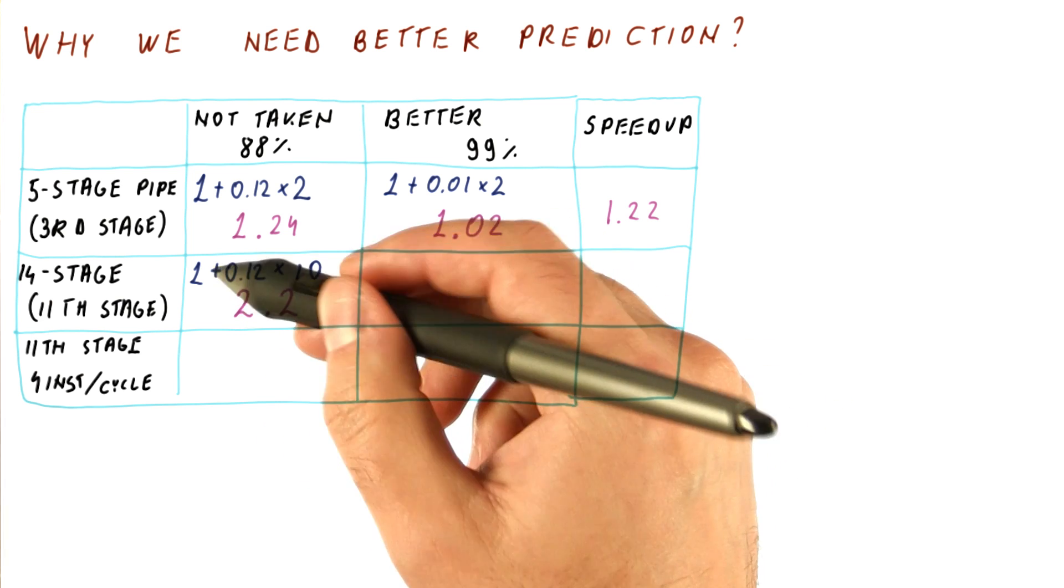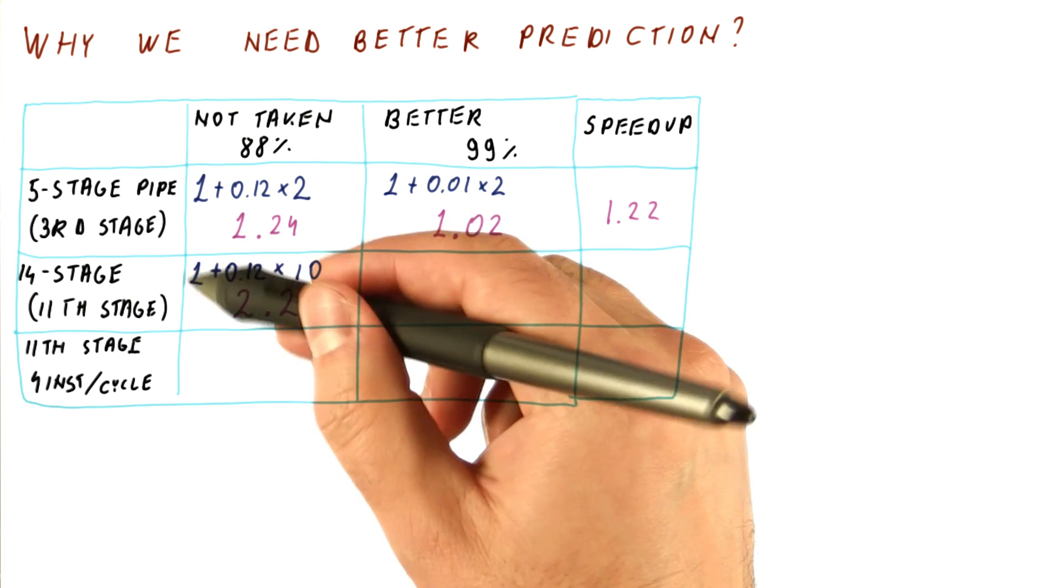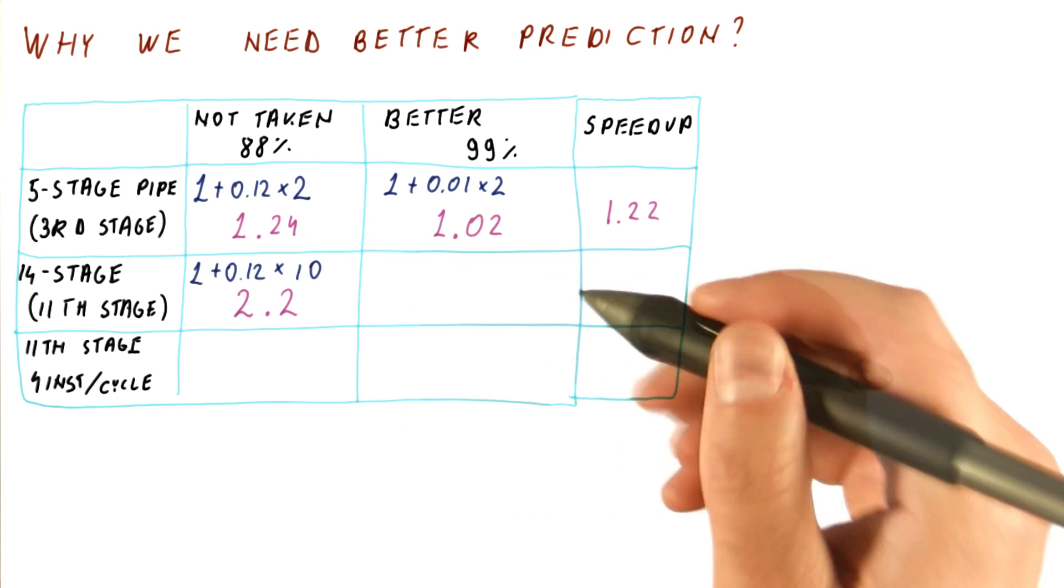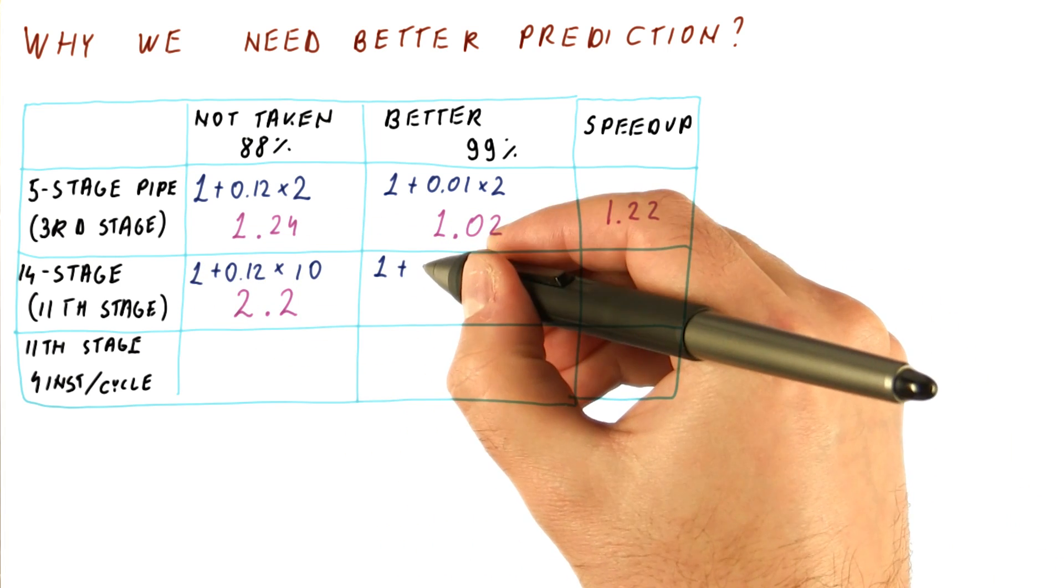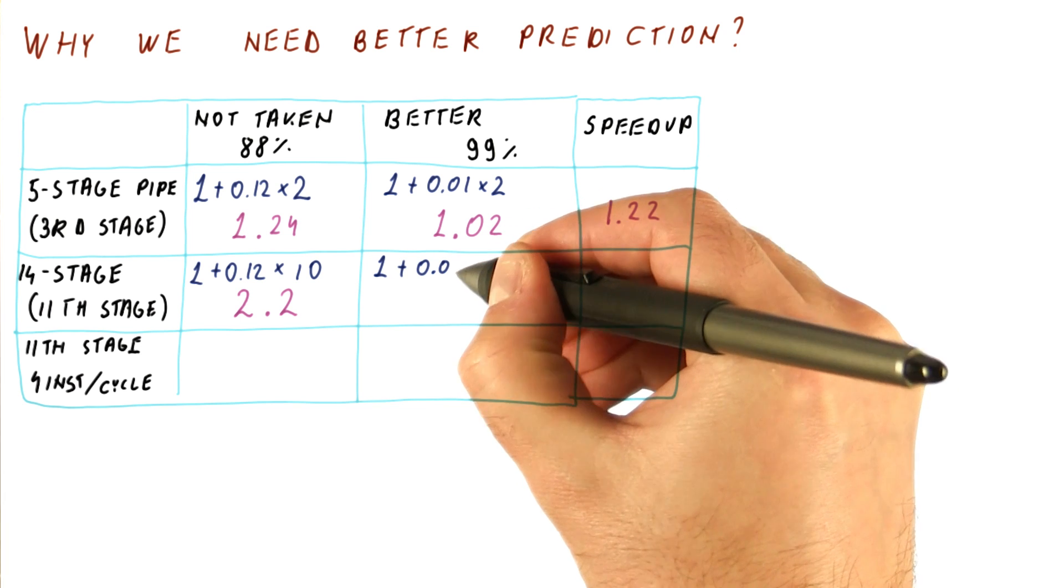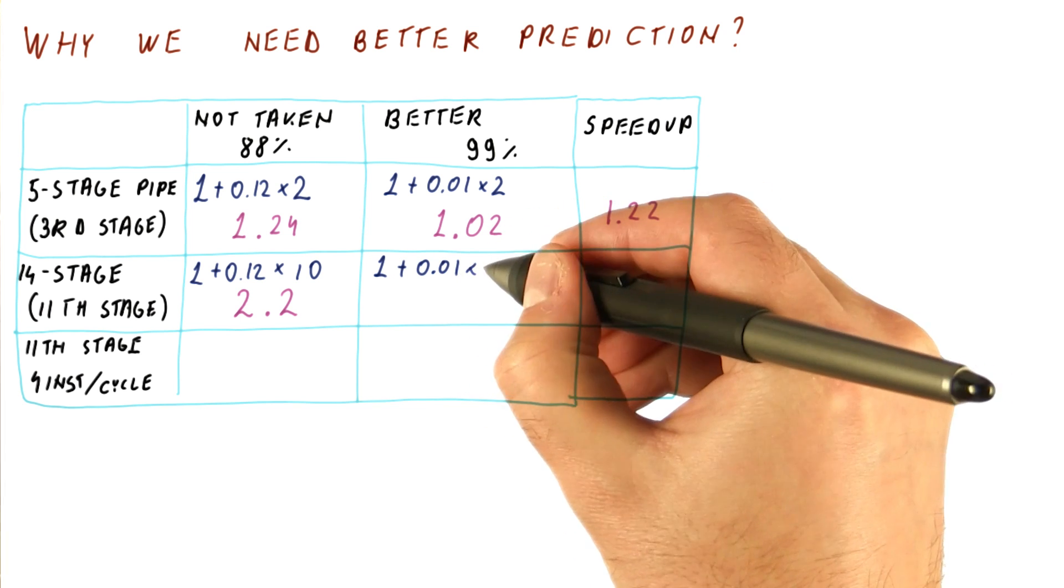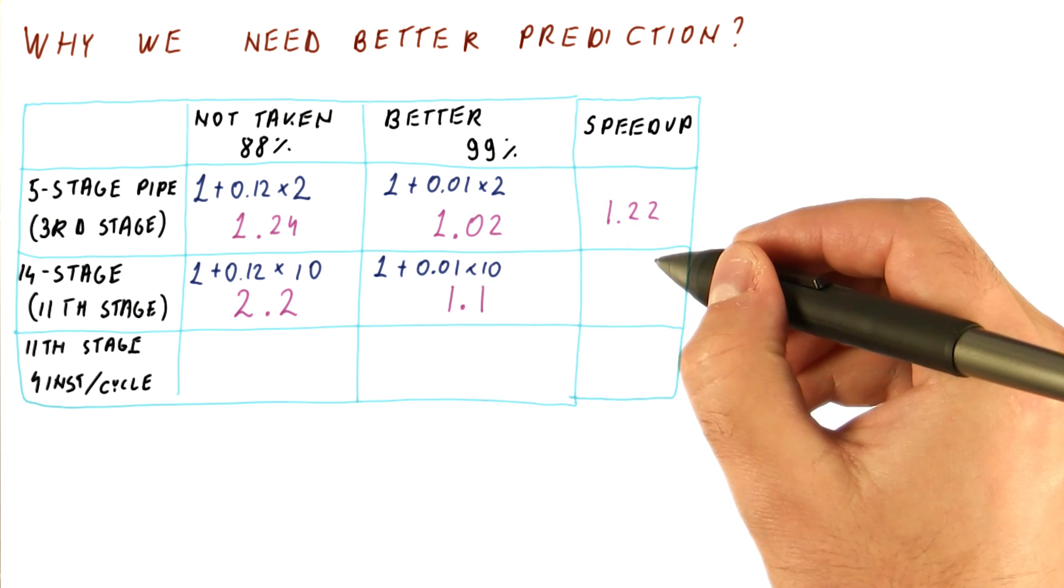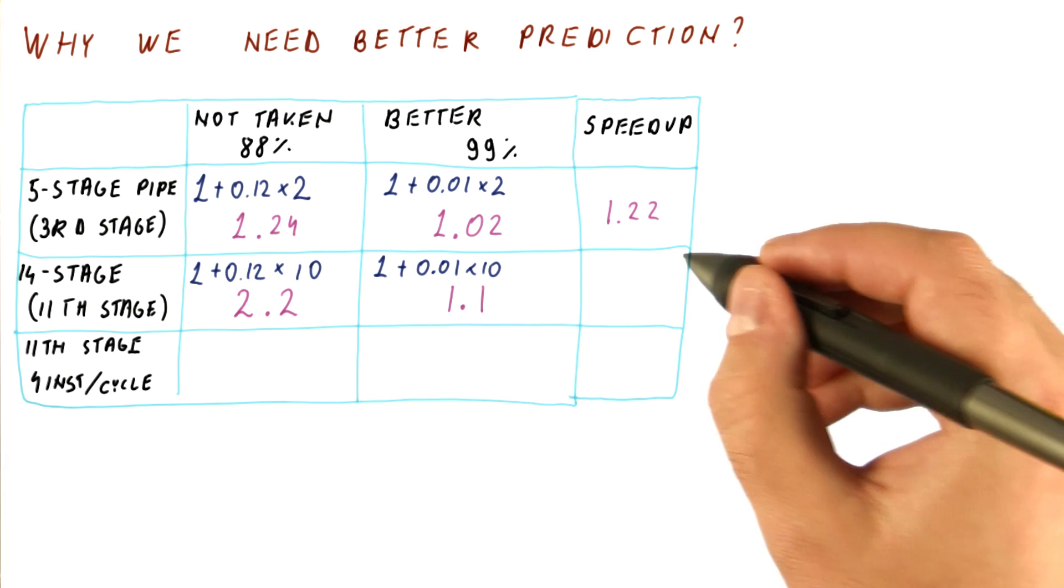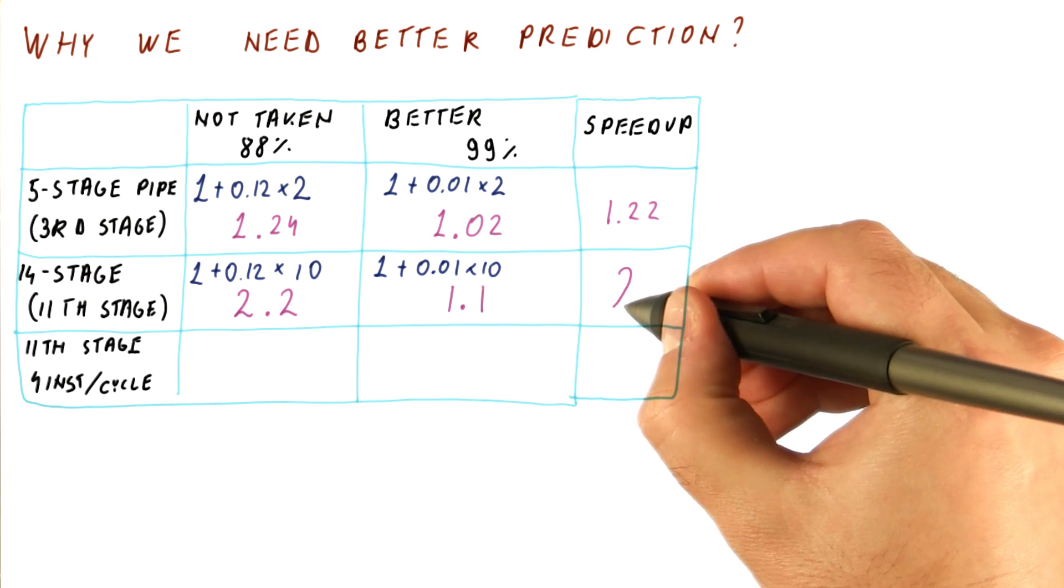This is much worse than the one we would be getting with no mispredictions. With our better predictor, we get 1 plus 1% misprediction rate times 10 for a total CPI of 1.1, and that gives us a speedup of 2.